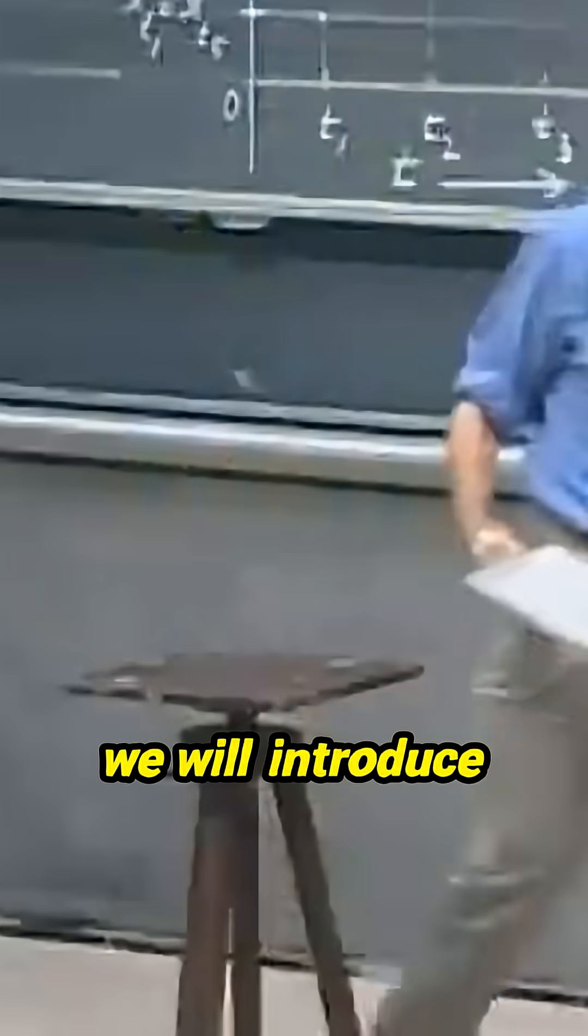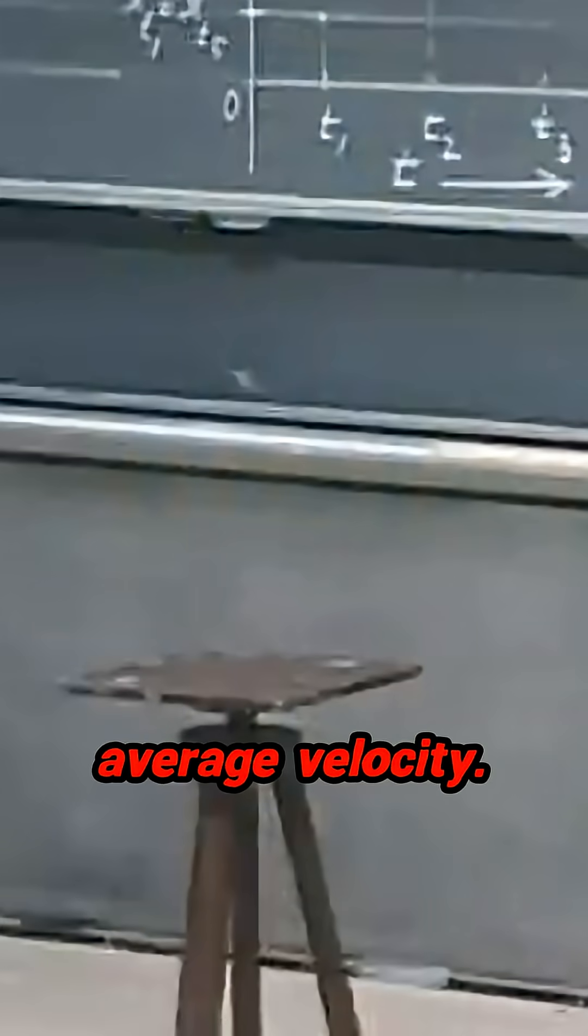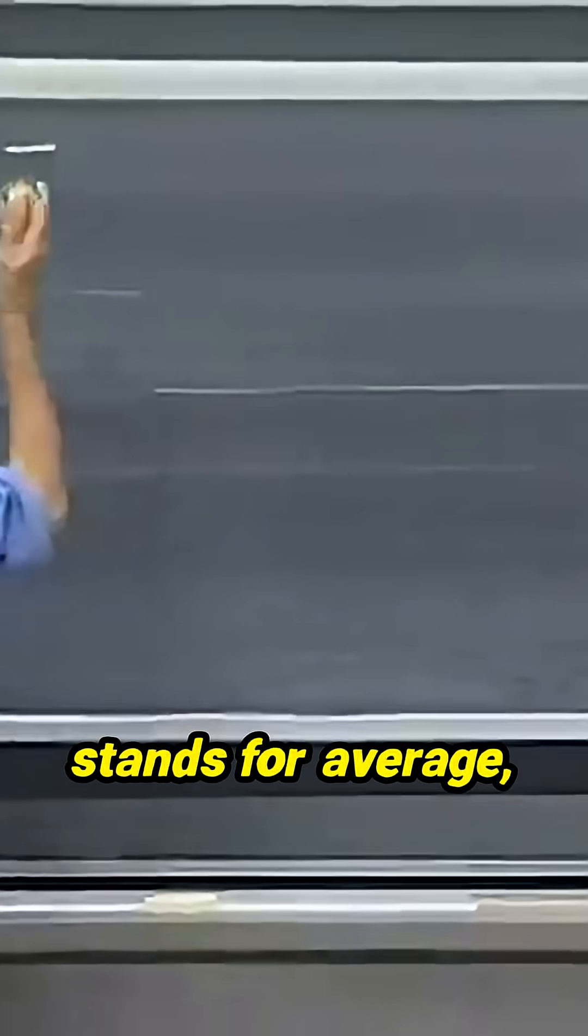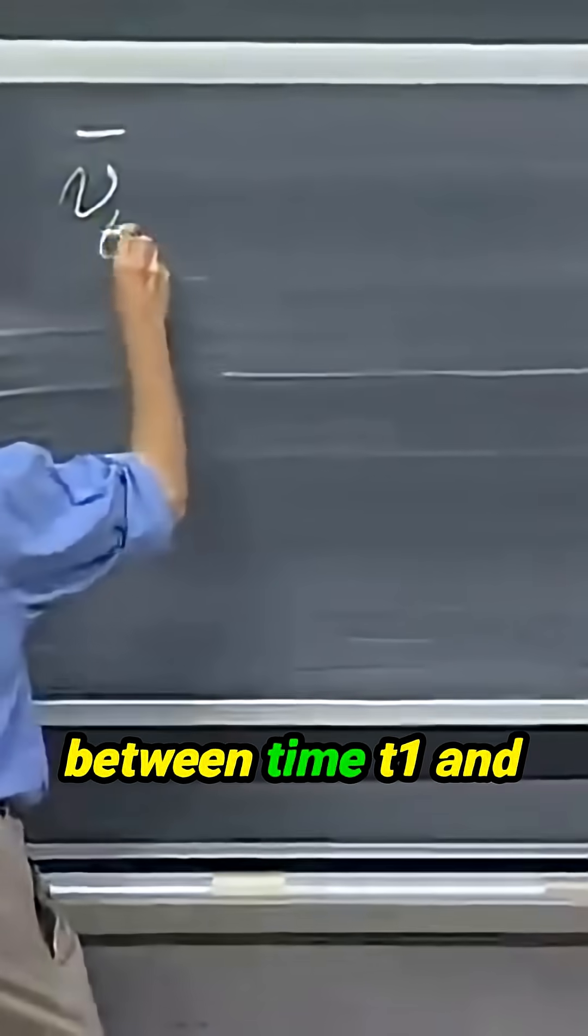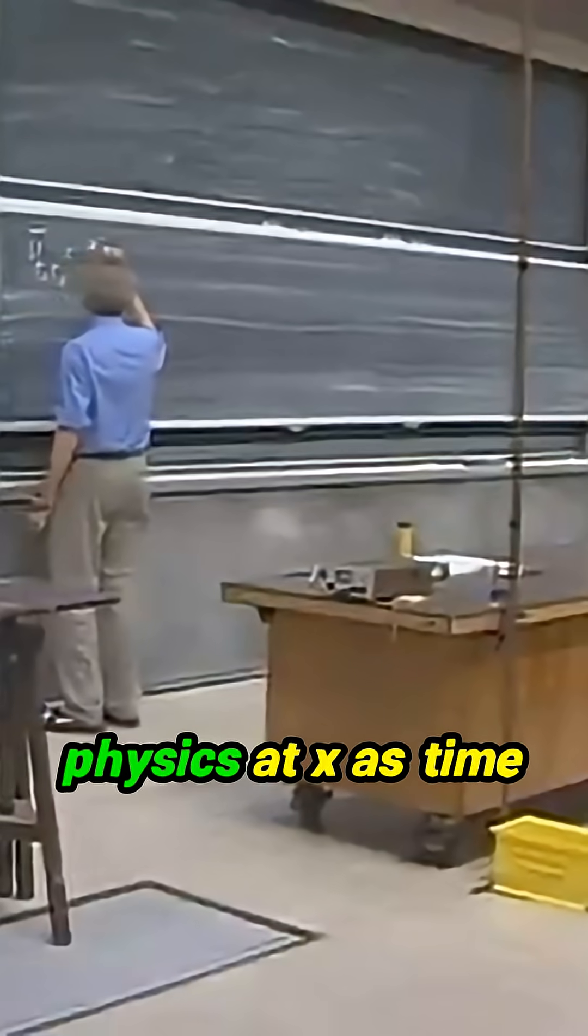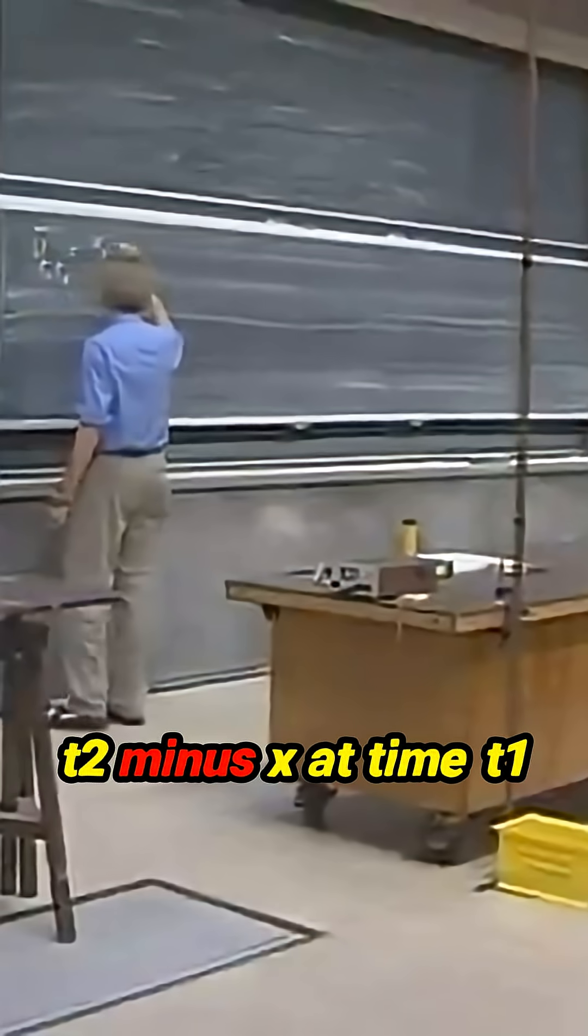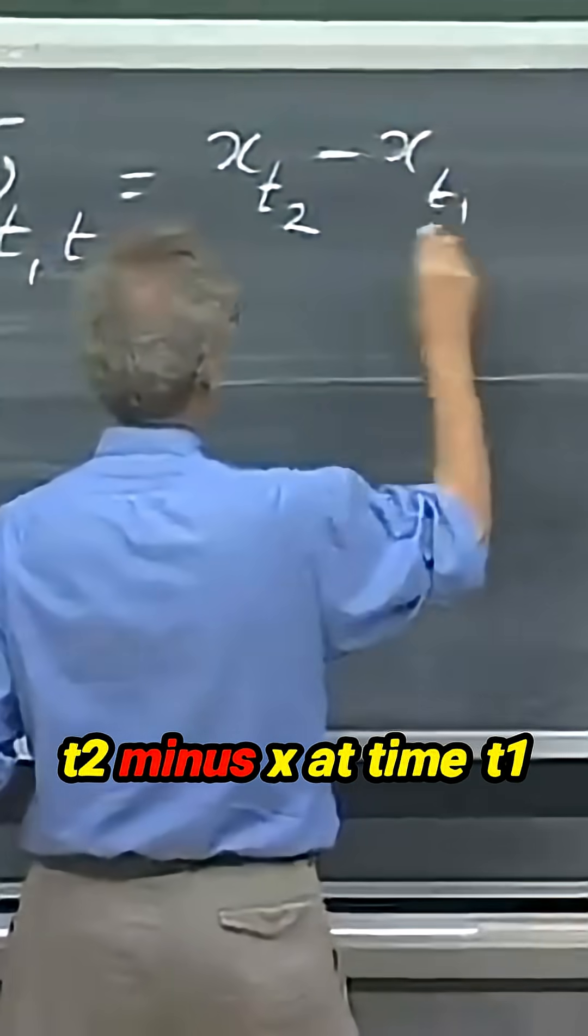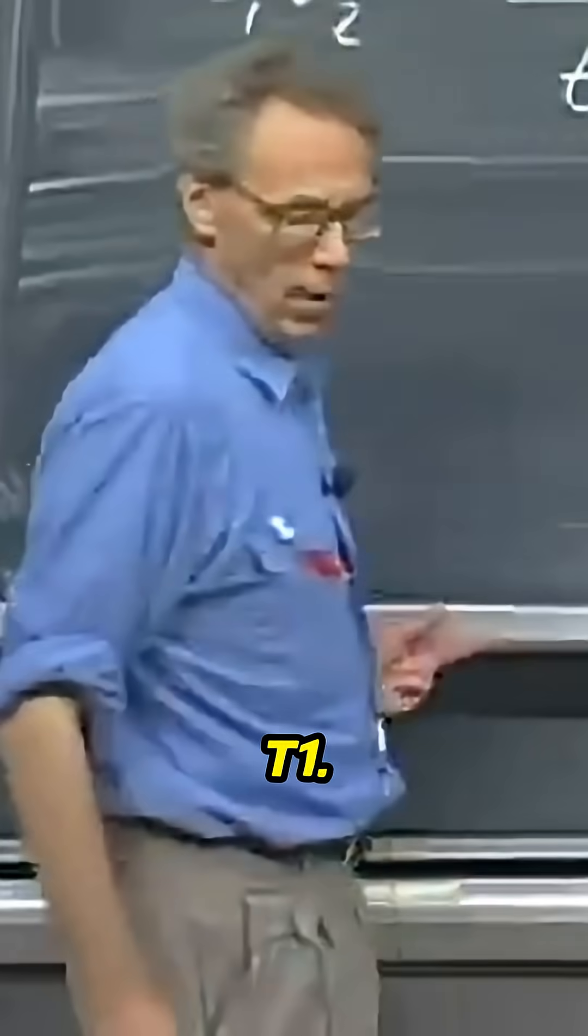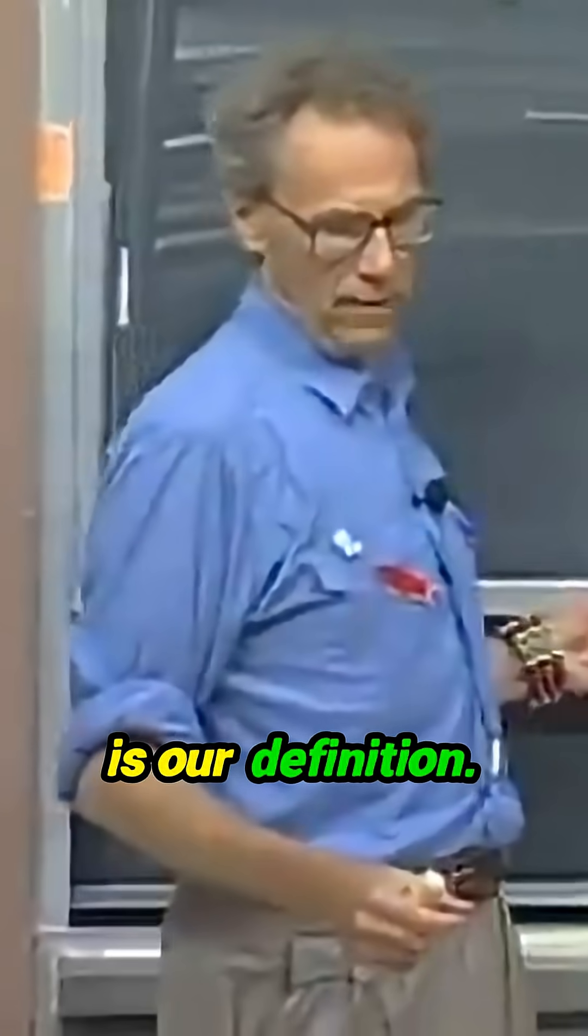Now we will introduce what we call the average velocity. I put a bar over it, that stands for average, between time t1 and time t2. That we define in physics as x at time t2 minus x at time t1 divided by t2 minus t1. That is our definition.